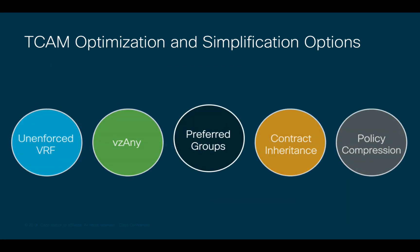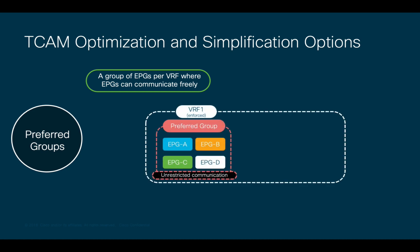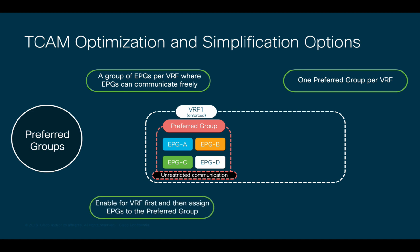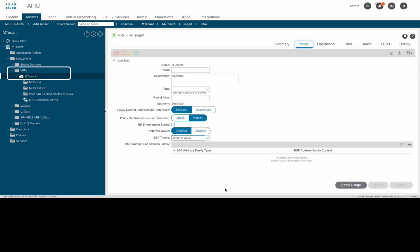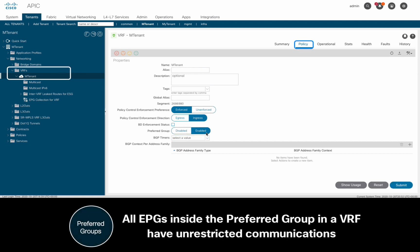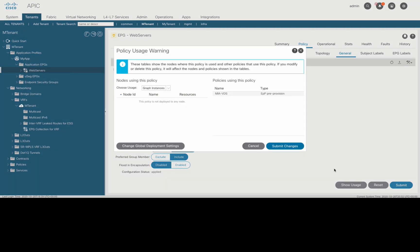There's another option called preferred groups. When you enable preferred groups at the VRF level, you can assign any EPG to become a member of such preferred group. Any EPG that is part of it will have unrestricted communication inside the preferred group, while any EPG outside the preferred group will still require a contract. Keep in mind that you cannot use VCNE and preferred groups at the same time, since the latter is a subset of the former. To enable preferred groups, go to your VRF, in the policy tab click on preferred group enable, then inside each EPG you want to belong to the preferred group, just enable the option and you're done.